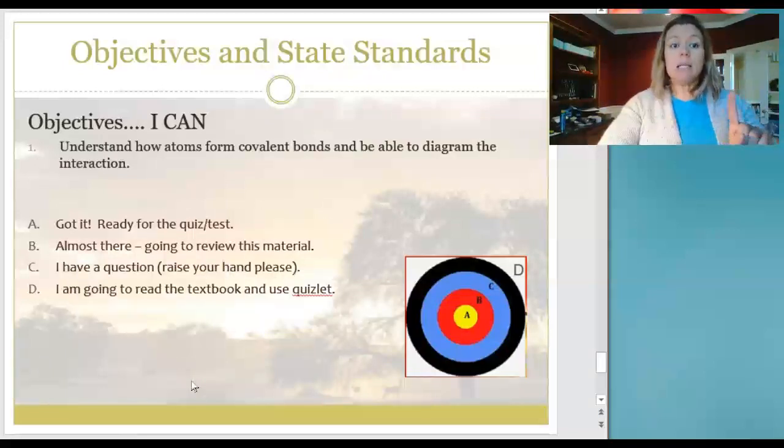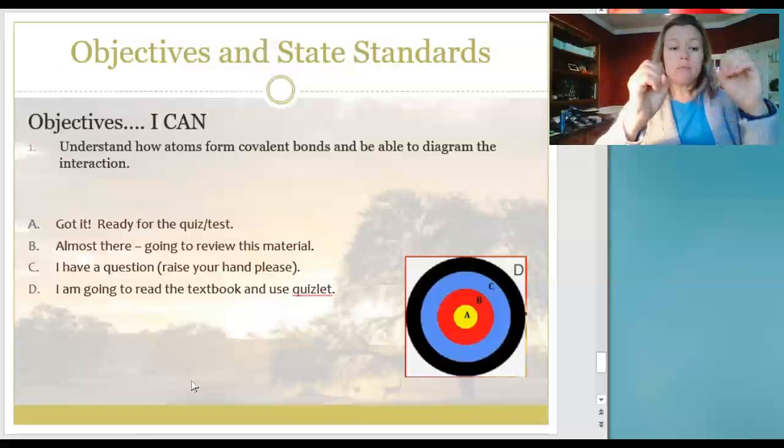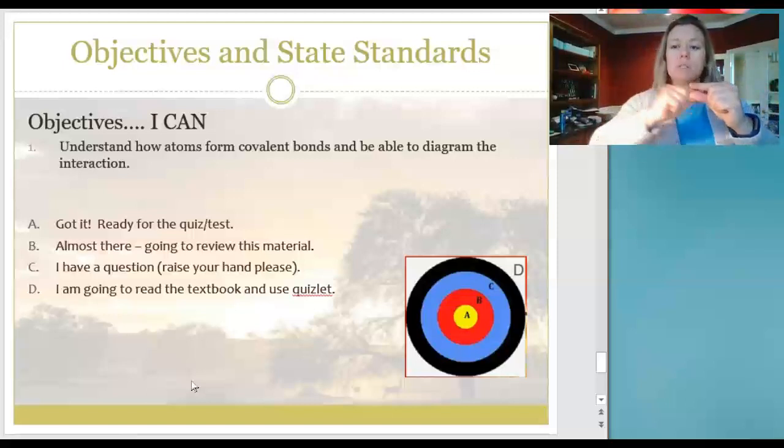The only thing that we're focusing on today is to understand how atoms can form covalent bonds and be able to diagram the interaction. If I ask you to diagram an interaction, I want to see two atoms or more and that the electrons between them are shared, so you'll see them smack in the middle or you'll see them orbiting around each one. You just have to be able to recognize that they're connected like a handshake.